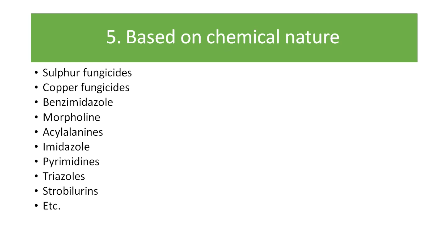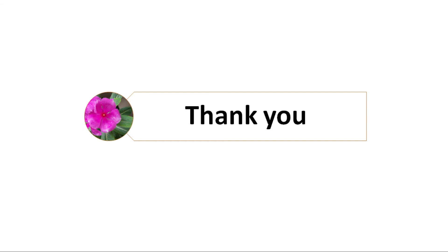Based on chemical nature, fungicides can be grouped into sulfur fungicides, copper fungicides, benzimidazole, morpholine, acylalanines, imidazole, pyrimidines, triazoles, strobilurins, and many others — there are hundreds of chemicals being used as fungicides. In subsequent YouTube videos we will learn the chemical natures of various fungicides and their modes of action. So this is in brief the classification of fungicides based on certain factors. Thank you very much — if you have any query related to this video, you can write in the comment box.